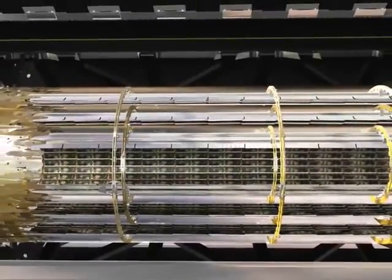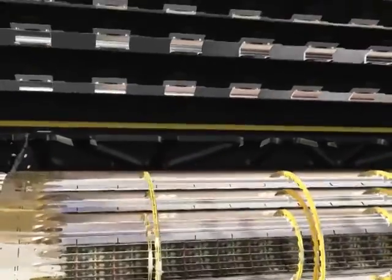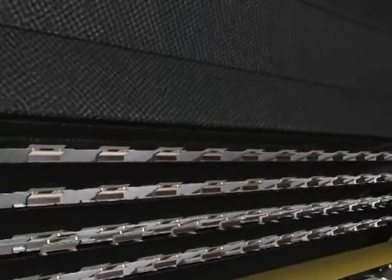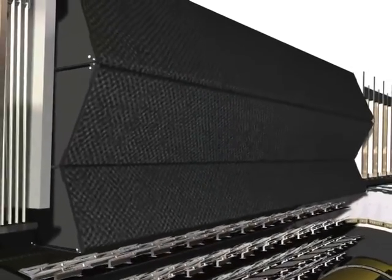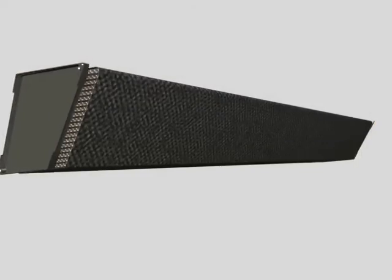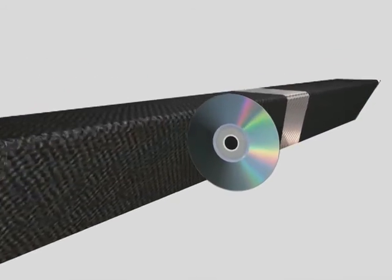Look now at the transition radiation tracker outside the silicon detectors. This device can distinguish between different types of particles. It's made of a large number of tubes filled with gas.